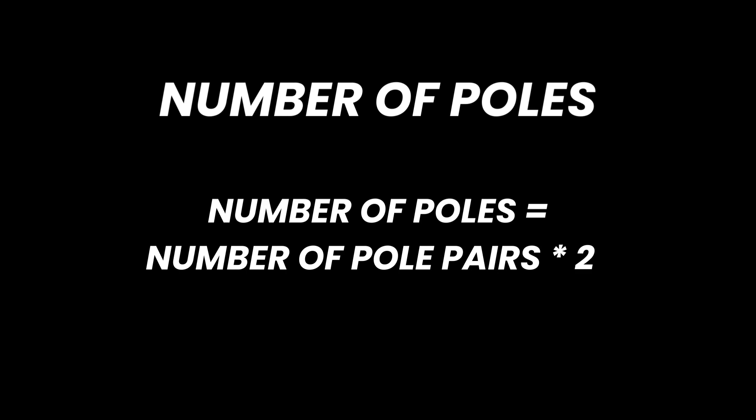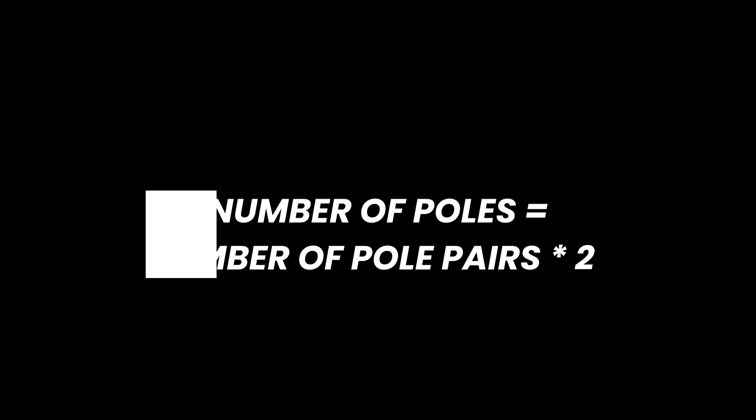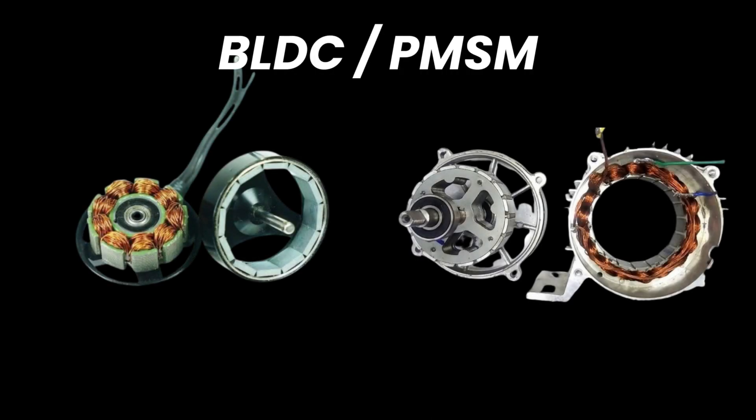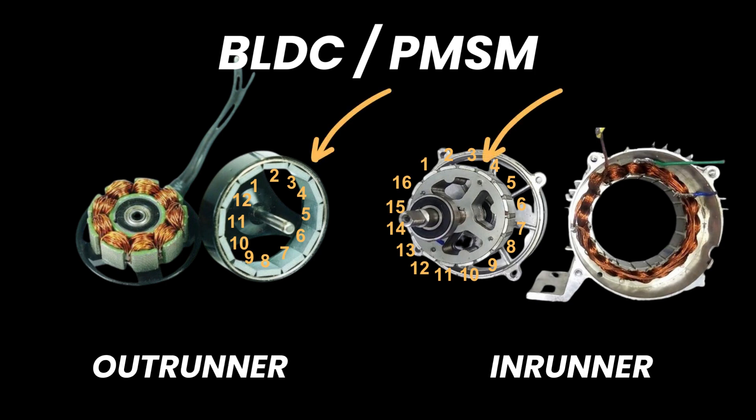Each pole pair consists of two poles, so doubling the pole pair value gives you the total number of poles. In the case of a brushless DC (BLDC) or permanent magnet synchronous motors (PMSM), the number of poles is equal to the number of magnets. The position of the magnets depends on the type of motor.